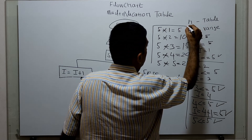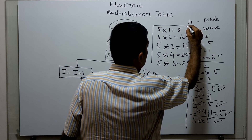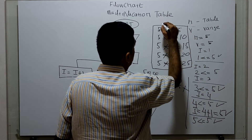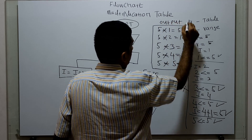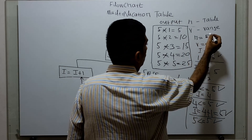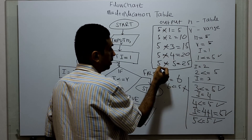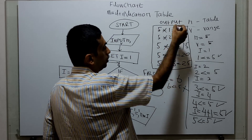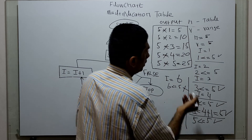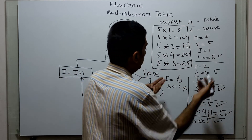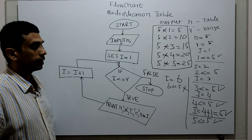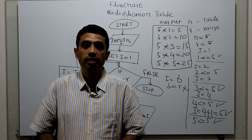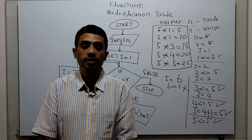This is my multiplication table output. For table n equal to 5, range is 5: we get printed 5 into 1 equal to 5, up to 5 into 5 equal to 25. You can give any table and any range — the flowchart will work perfectly. That's it, thanks for watching this video. Please subscribe to my channel, share, comment, and press the bell button. Thank you.